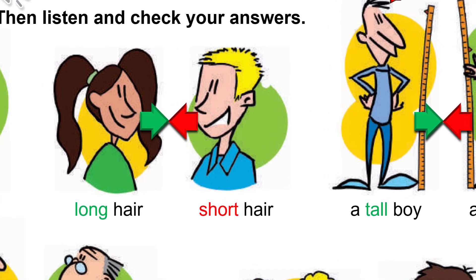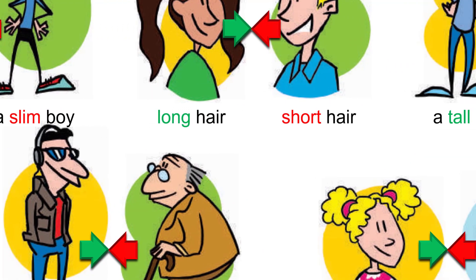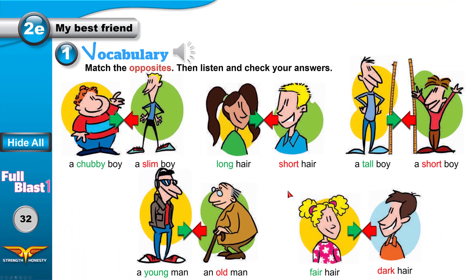A tall boy, a short boy, a young man, an old man, fair hair and dark hair. What does fair mean? Fair means close to white in color. Dark means close to black in color. I can say fair hair or fair skin — that means not dark, close to white. Now notice something.